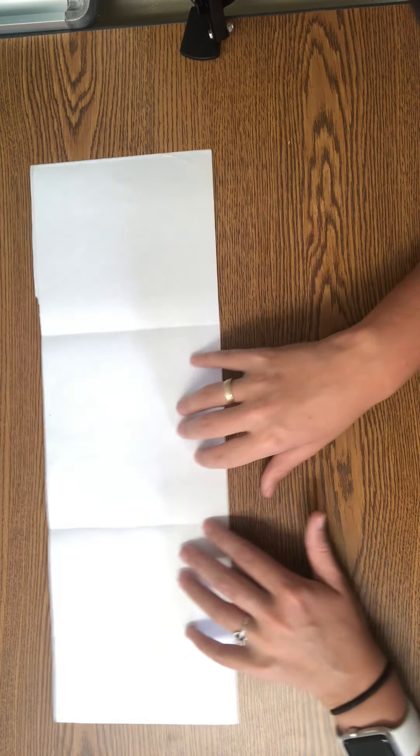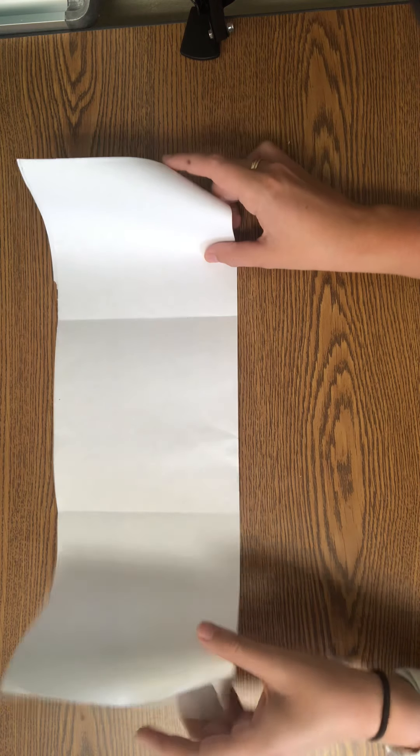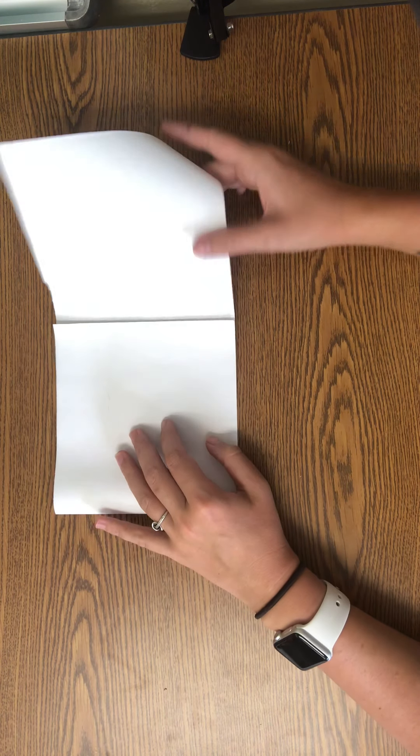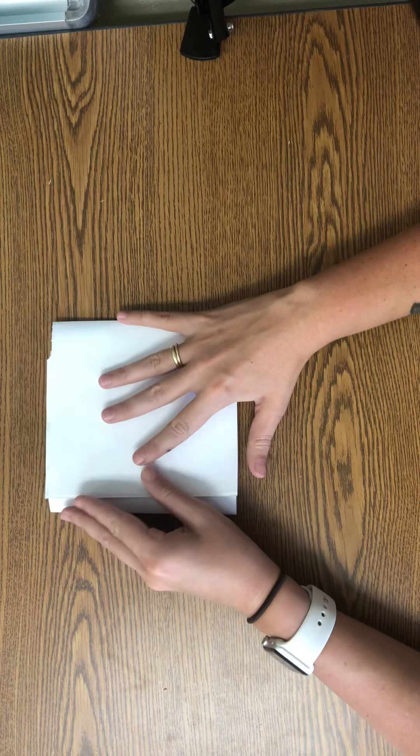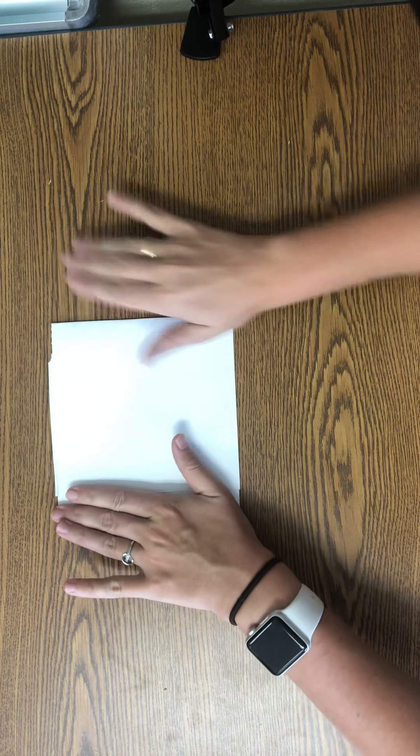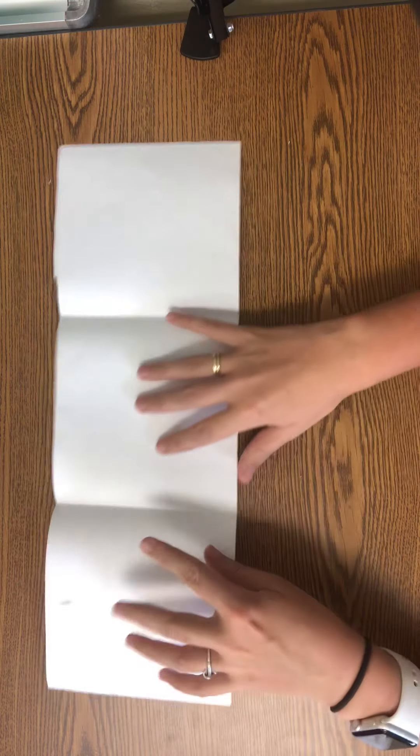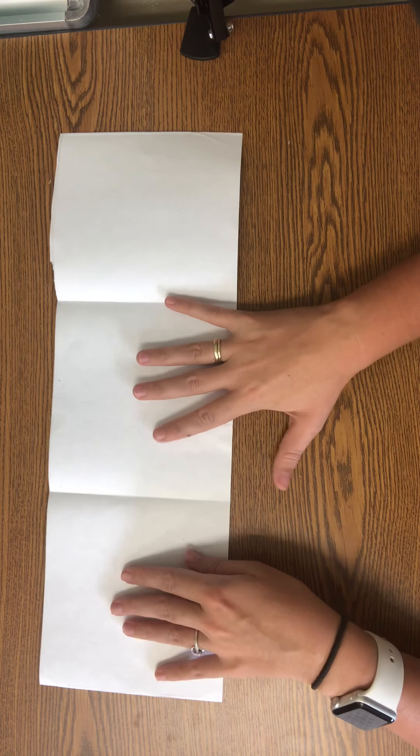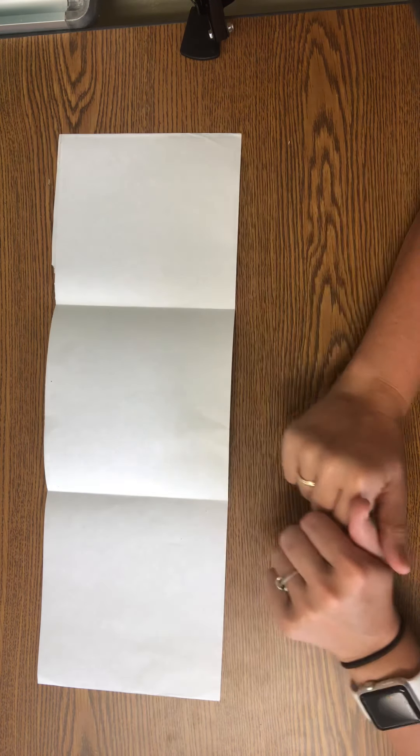But I took my paper and I folded it into thirds. So I overlapped one side and pressed it on the other and creased it down. So now I have three boxes where I can draw three different Keith Haring people.